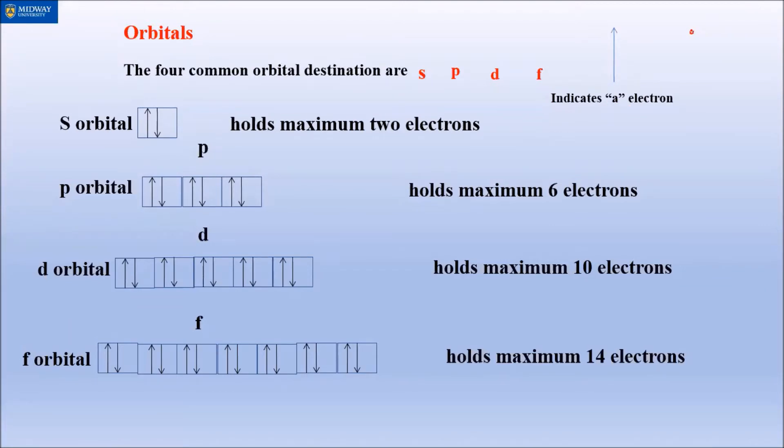For box notation purposes, we're going to call an electron as either up arrow or down arrow. We already know from our existing knowledge that S can hold two electrons, P can hold six electrons, D can hold 10, and F can hold 14.